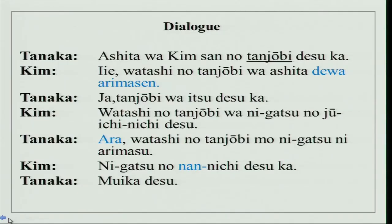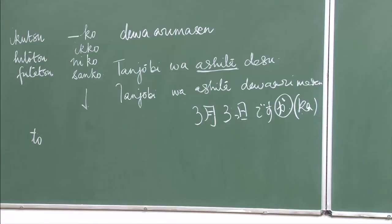Jaa tanjobi wa itsu desu ka? Watashi no tanjobi wa ni gatsu no jiuichinichi desu. Instead of ashita you can put your date and ask: tanjobi wa sangatsu mikka desu ka? You can answer: iie, watashi no tanjobi wa sangatsu mikka de wa arimasen. You can ask when using itsu: tanjobi wa itsu desu ka? Ara, watashi no tanjobi mo ni gatsu ni arimasu — ara is an expression of surprise meaning 'oh really.' Ni gatsu no nannichi desu ka? Roku nichi desu. You can talk like this and have a small dialogue about tanjobi.